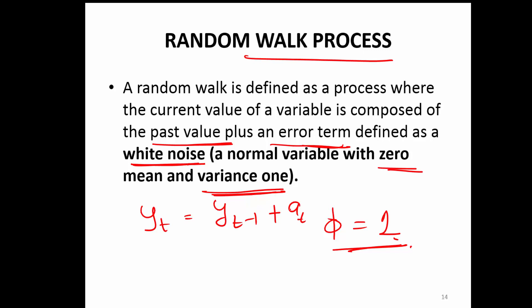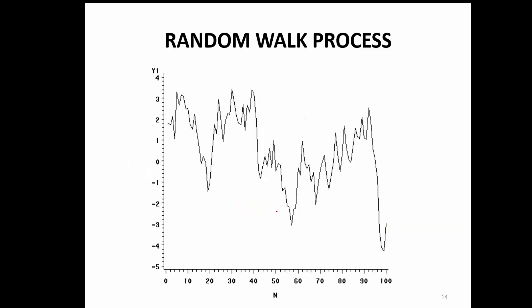What is the motivation behind understanding the random walk process? When you have a time series data and you find out that it is following the random walk process, then you stop there. That is basically a check that one needs to do before even going for other forecasting techniques. If you plot a random walk process, it looks something like this — it looks very weird, there is no trend at all, there is no pattern.